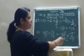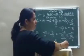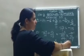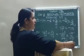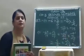5 upon 2 means 2 whole number 1 upon 2. This is the answer.